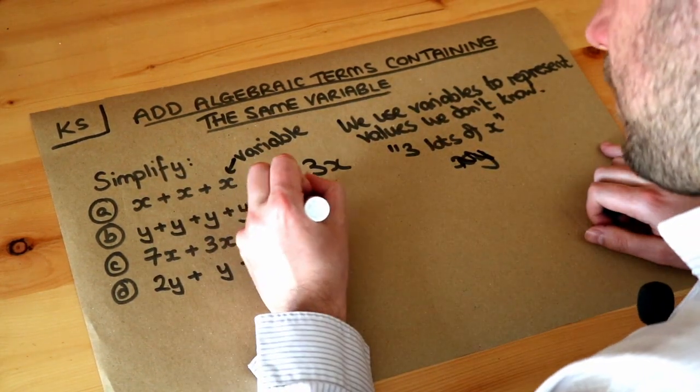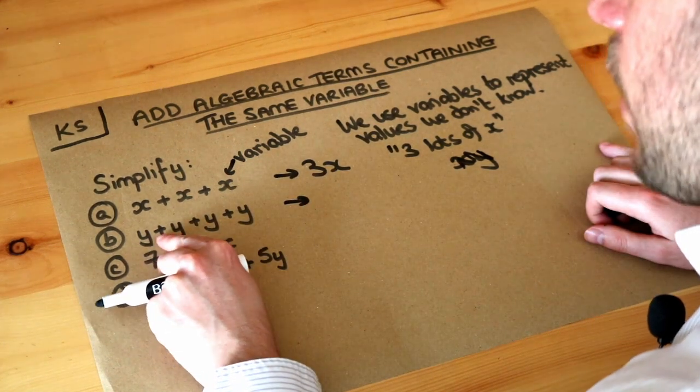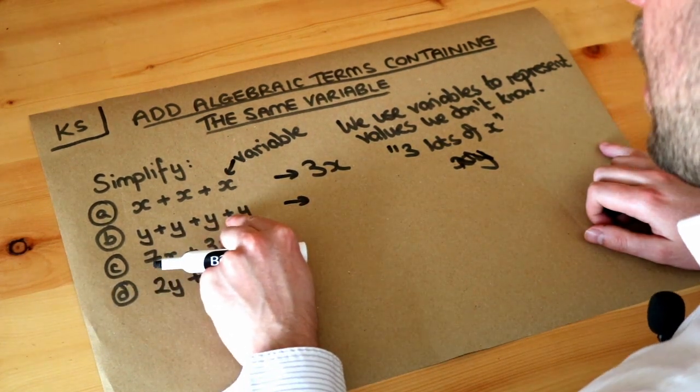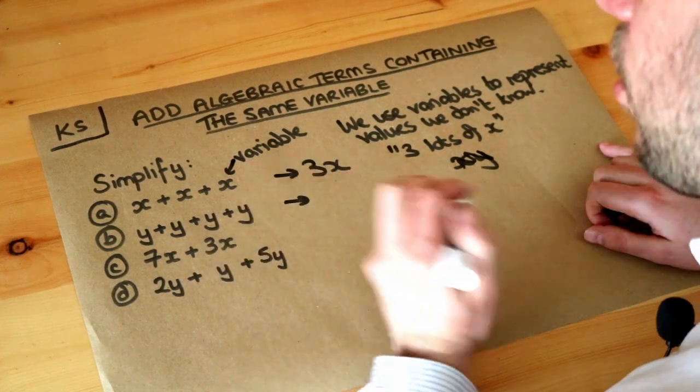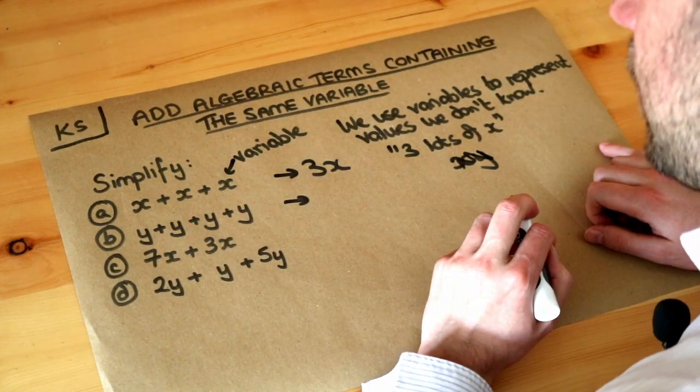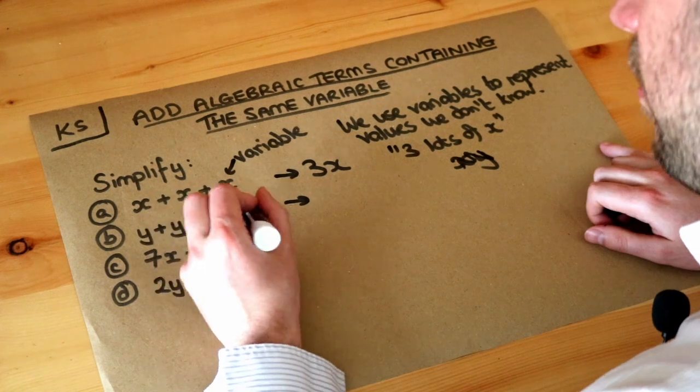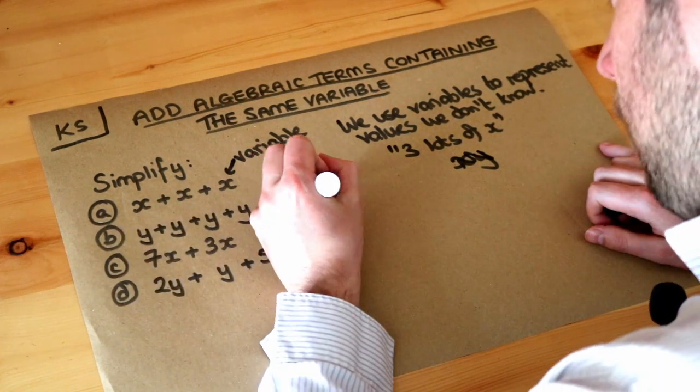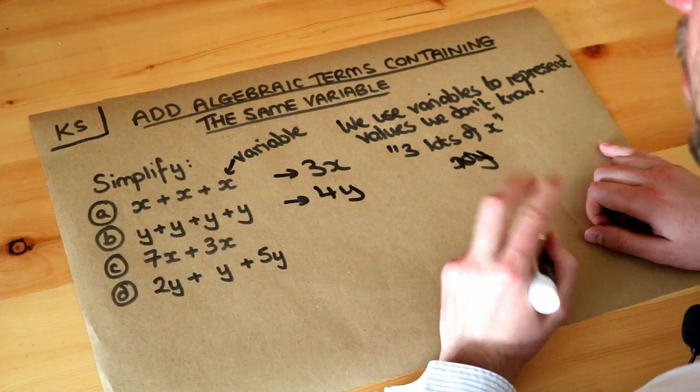Let's look at the next one. We've got one lot of y, we're adding another lot of y, we're adding another lot of y, and we're adding another lot of y. How many lots of y do we have in total? Well in total we've got four lots of y. There's four of these. So we have four lots of y. 4y means four lots of y.